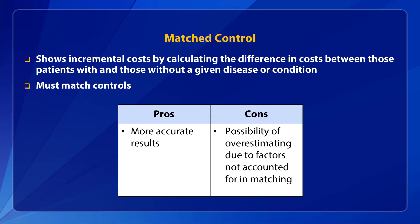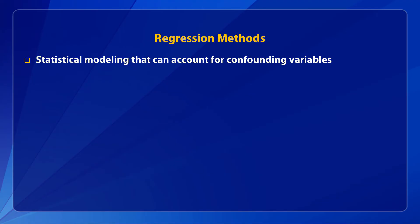Another method for conducting cost-of-illness analysis is to match cases — in this case people with hypertension — to controls, then determine the incremental differences in use and costs of health care. This approach assumes that all confounding factors, such as age, are observable and accounted for in matching, and may provide more accurate results. However, we may still overestimate incremental costs if there are unaccounted confounding factors. There are regression methods available to help solve problems associated with observable and unobservable confounding factors, and we'll show an example in the next few slides.